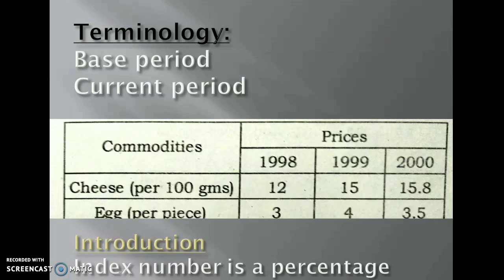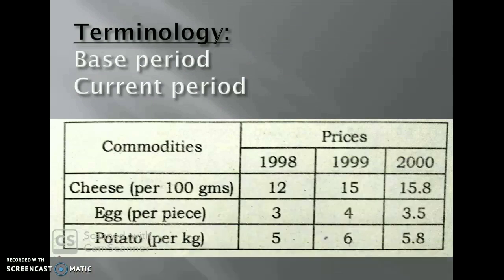Our next topic now is terminologies. Here, mainly two terms are there, base period and current period. To study this, go for the below picture. Here, prices of 1998, 1999 and 2000 are given. If you are comparing between 1998 and 1999, you can say our base period is 1998 and current period will be 1999. And if you are comparing between 1999 and 2000, you can say 1999 is our base period and 2000 is our current period.